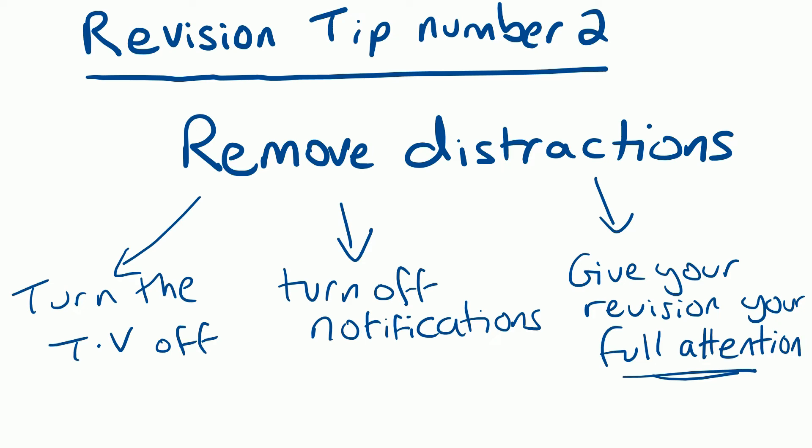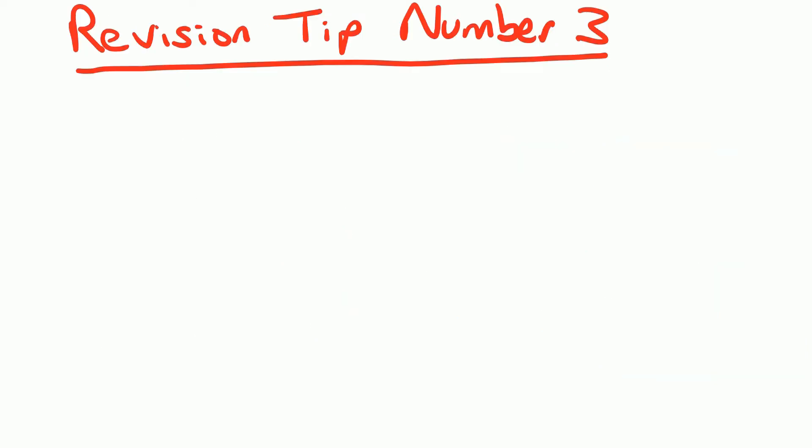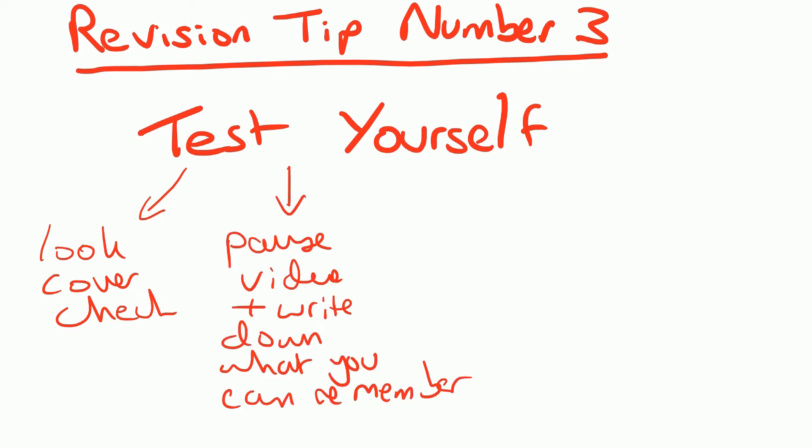Revision tip number three is test yourself in some way. So that could be the look-cover-check method, where you might have five things you need to remember on a page of your book and you try and remember it for a minute or two. Turn over - can you write those down on another piece of paper? If you're watching revision videos, pause the video and write down what you can remember, or at the end of the video can you make it into a list or a spider diagram to summarize what you've learned.